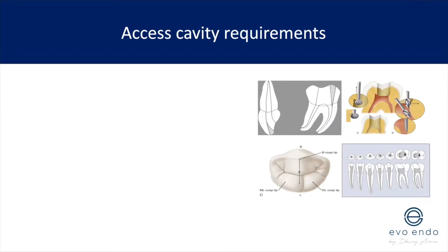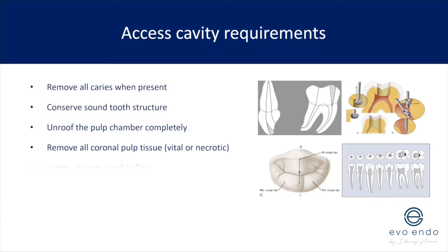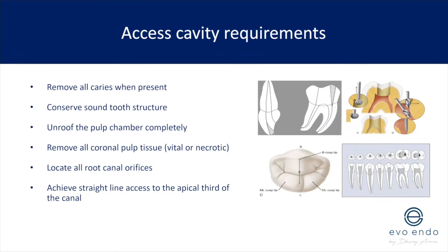What are we looking for from our access cavity? Fundamentally, you want to remove all the caries when present. I don't understand why people do such small access cavities through large amalgam or composite restorations, because you have to always start with why. Why did that tooth go non-vital? If you can start with why, you can give a better prognosis to the tooth. If that restoration is leaking and you don't replace it, you've not started from a solid foundation. We also want to preserve as much quality and quantity of tooth structure as we can.